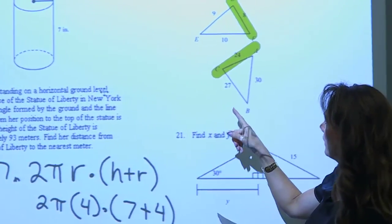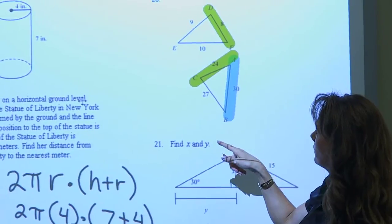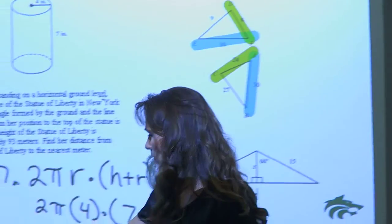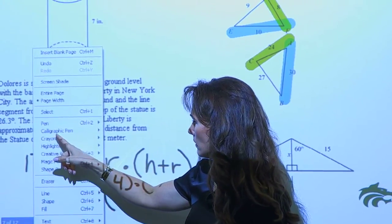Alright, now from here I have 30, what matches up with 30 because it's my largest? Yes. 10, are we good there? Yes. And then what is left? 9 and 27.